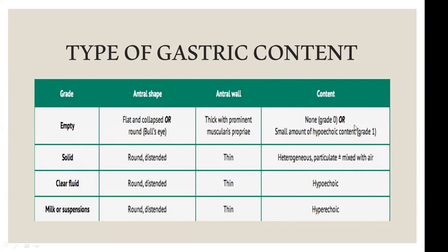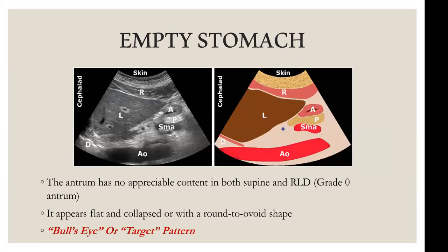With clear fluid, the antrum is round and distended with mainly hypoechoic, blackish appearance. Since gastric secretion can also appear this way, volume calculation is needed — if more than 1.5 ml per kg, the patient is high risk for aspiration. With milk and suspensions, a curdled appearance with hyperechoic or whitish spots may be seen. Fluid with air bubbles produces a starry night appearance, seen after ingestion of clear fluids or effervescent drinks, or when solids mix with liquids.